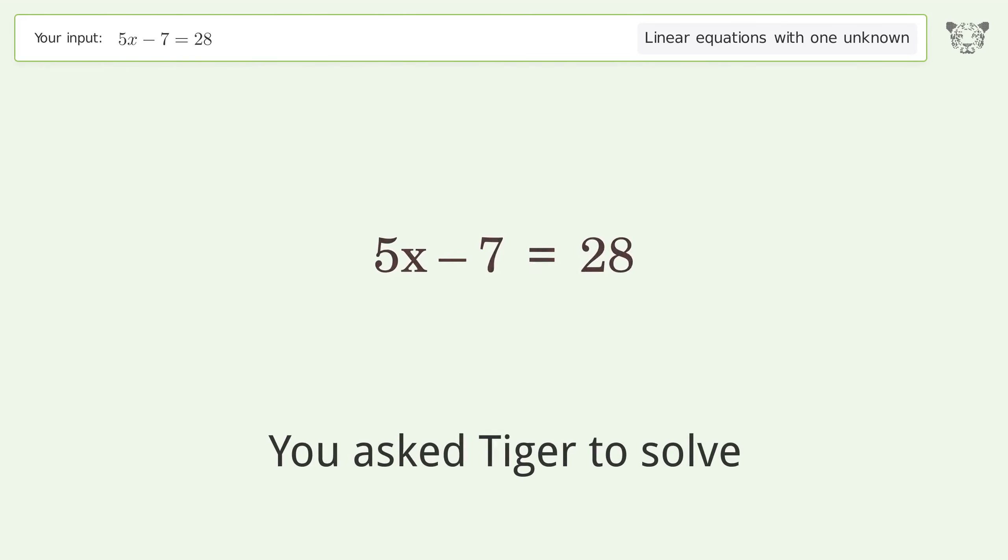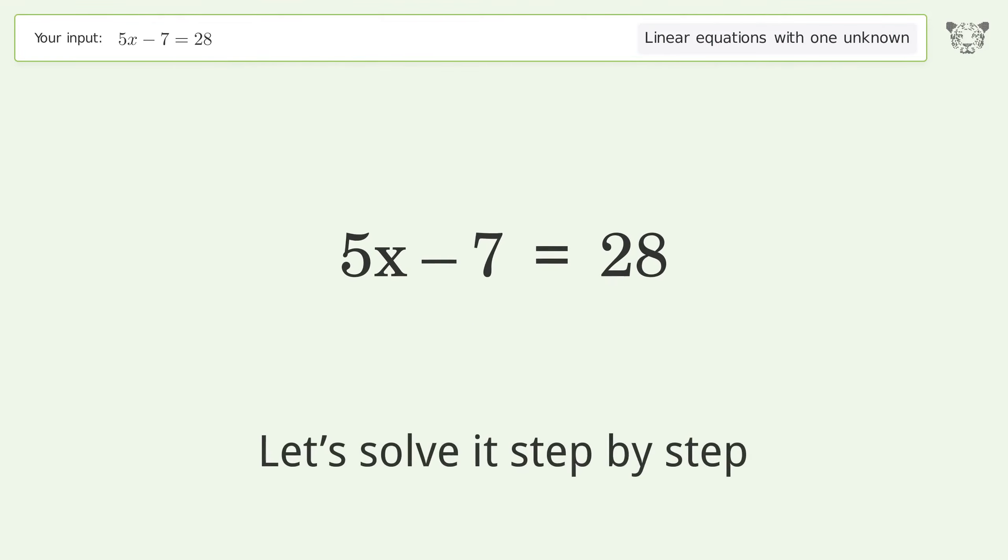You asked Tiger to solve. This deals with linear equations with one unknown. The final result is x equals 7. Let's solve it step by step.